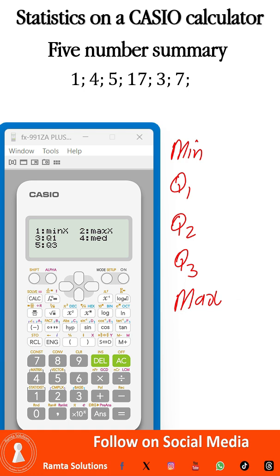So now with min max, I want to find the minimum value. Minimum is option one. I'm going to press minimum and then equal to. It says it is one. So we are good.